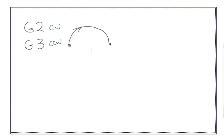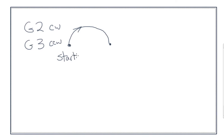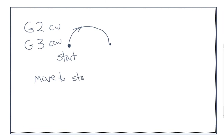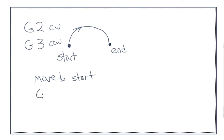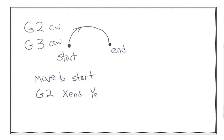In general, the procedure — and there are a couple of ways to do this, but I'm just going to cover one — is that you move to the beginning of the arc with a G1 or G0 command. That's your start point. Then in the G2 command you specify the X end coordinate and the Y end coordinate.